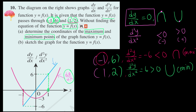For part b, sketch the graph. Since we have two turning points, we know we have a cubic function. We plot the minimum point at (1, 2) and the maximum point at (-1, 6). At the maximum point the curve is concave downward, then it curves down to the minimum point at (1, 2). This is how your graph is going to look.